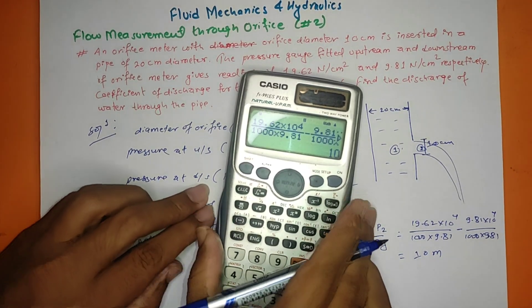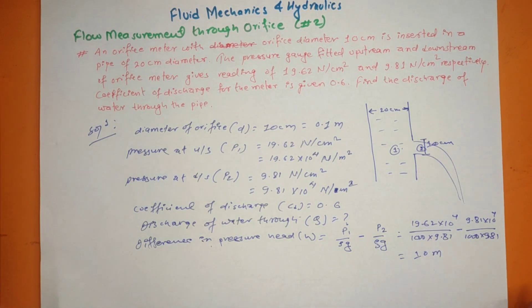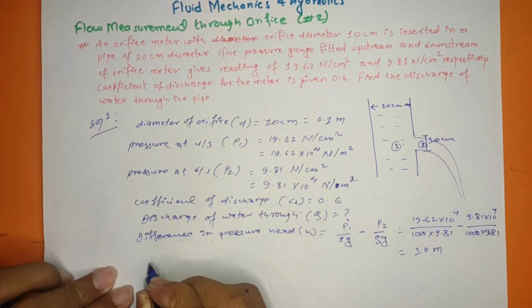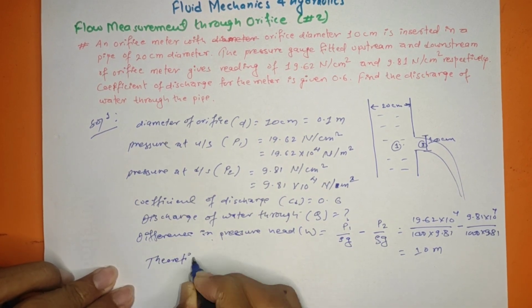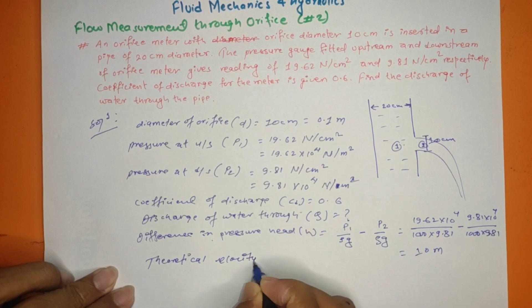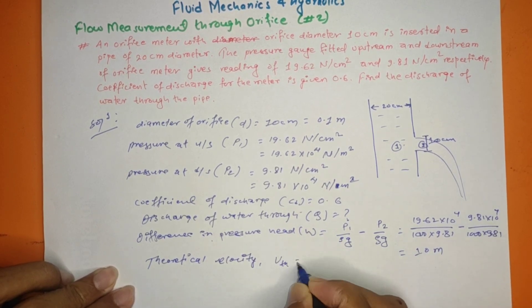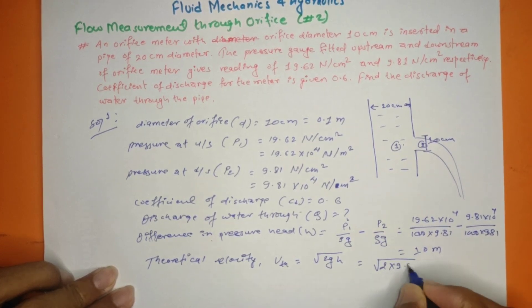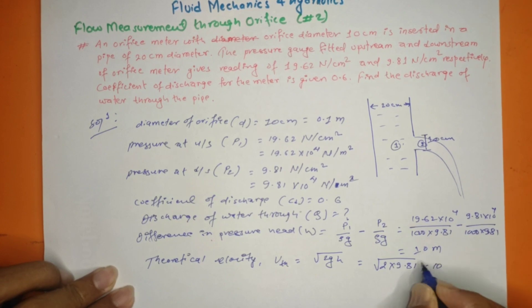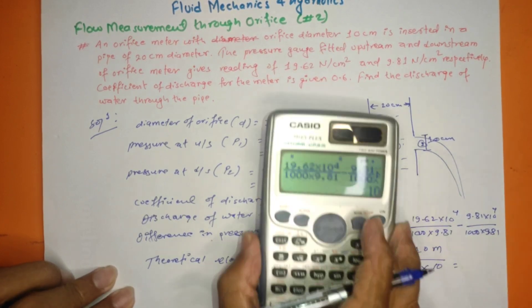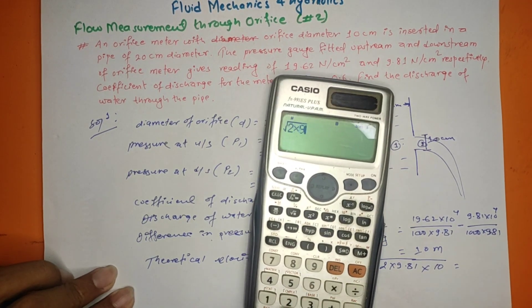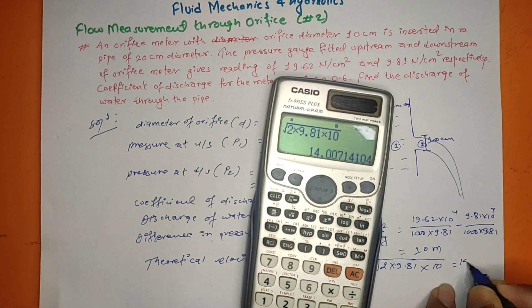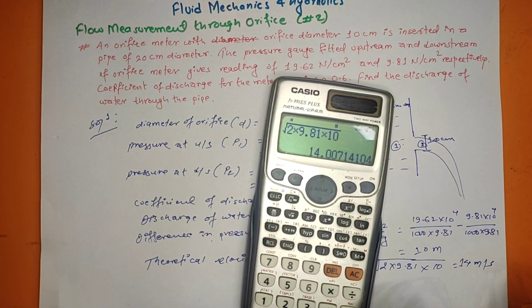Now we work out the theoretical velocity: root of 2g × h = root of 2 × 9.81 × h, which gives approximately 14 meters per second.